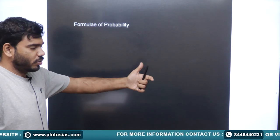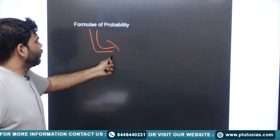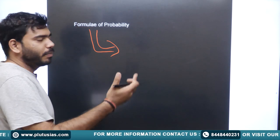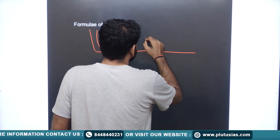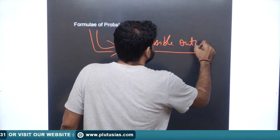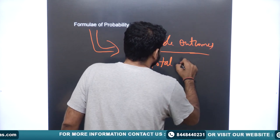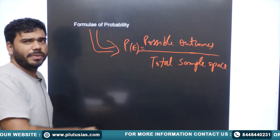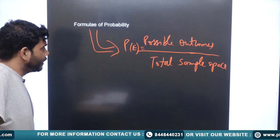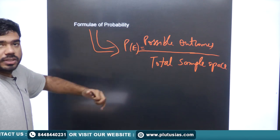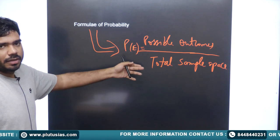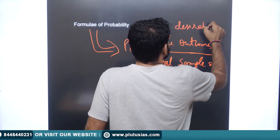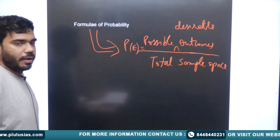Now we know what sample space is and what the possible events can be. The basic formula for calculating probability is: possible desirable outcomes divided by the total sample space. That is probability, represented by P. Probability equals the number of desirable outcomes divided by the total sample space.